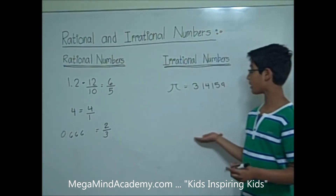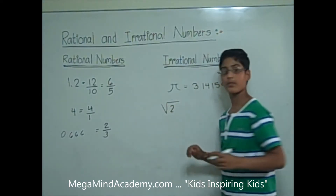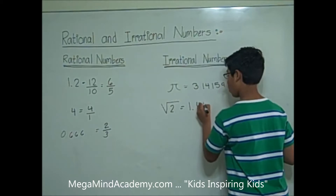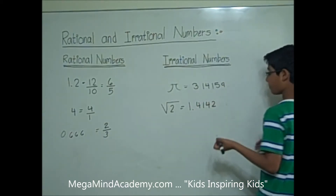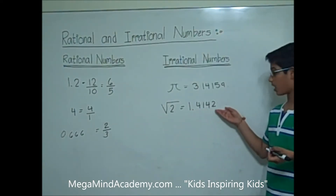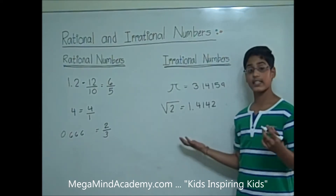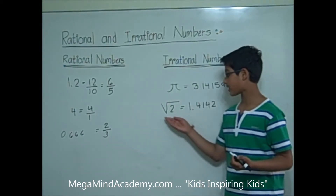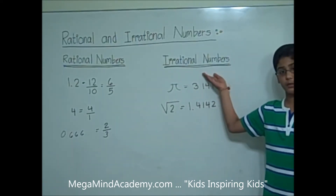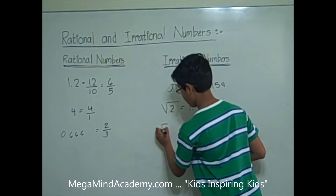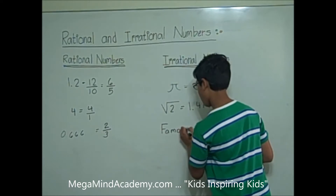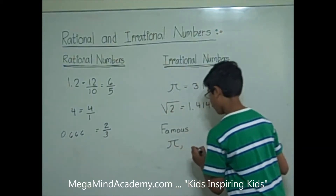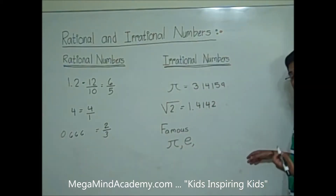Another irrational number is the square root of 2. The square root of 2 is equal to 1.4142... which cannot be made into a simple fraction because it never ends and does not have a repeating pattern. So the square root of 2 is an irrational number. Famous irrational numbers are pi, Euler's number, and the golden ratio.